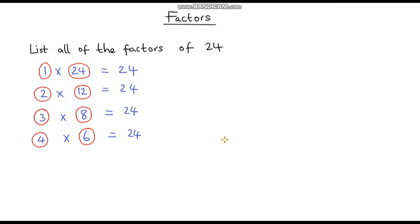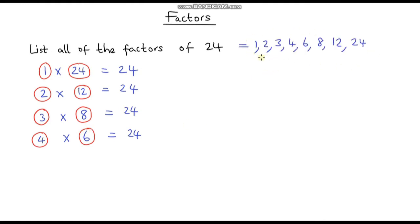Now if we move on to 6 — well we've already done 6. We've already figured out that 6 is a factor of 24, so we don't need to go any further. We can stop there. We have identified all of the factors of 24. So overall there are 8 factors of 24: 1, 2, 3, 4, 6, 8, 12, and 24.